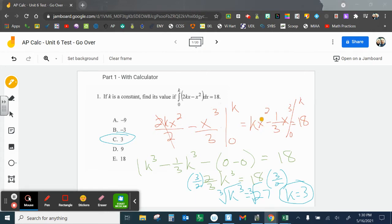So let's put in the k first. x squared becomes k squared times k is k cubed minus 1 third x cubed, which is going to be k cubed. When I put in the 0, that's 0 minus 0, that's gone.